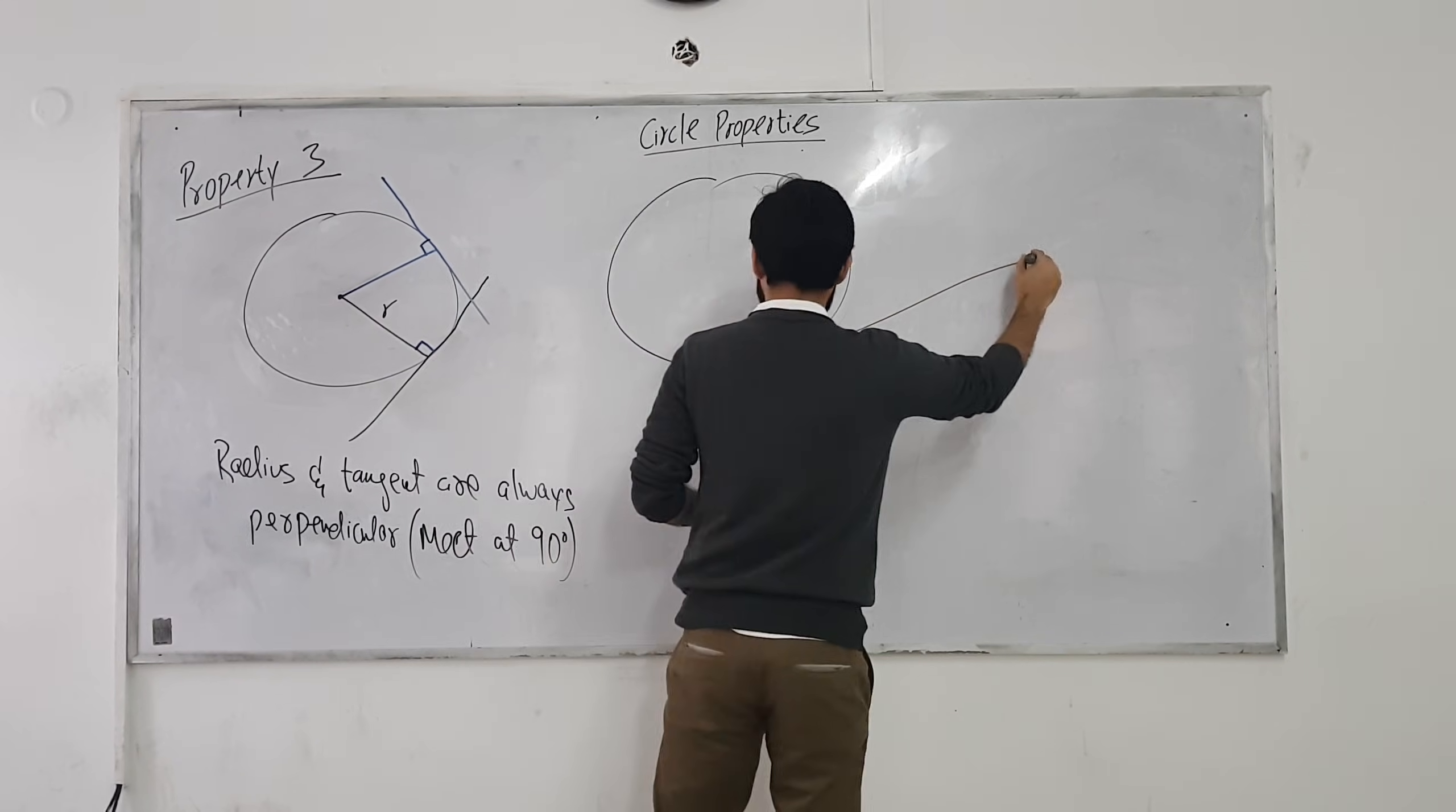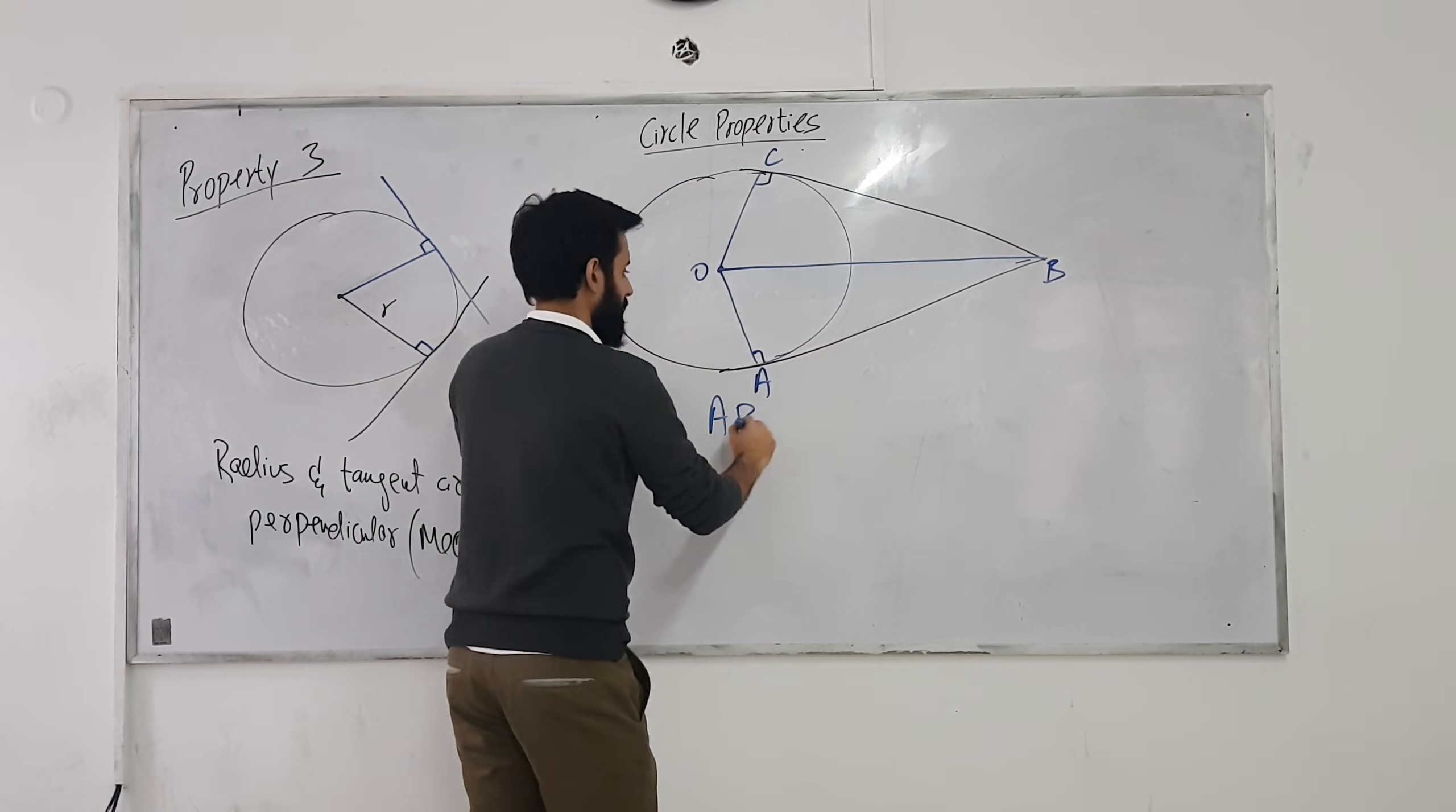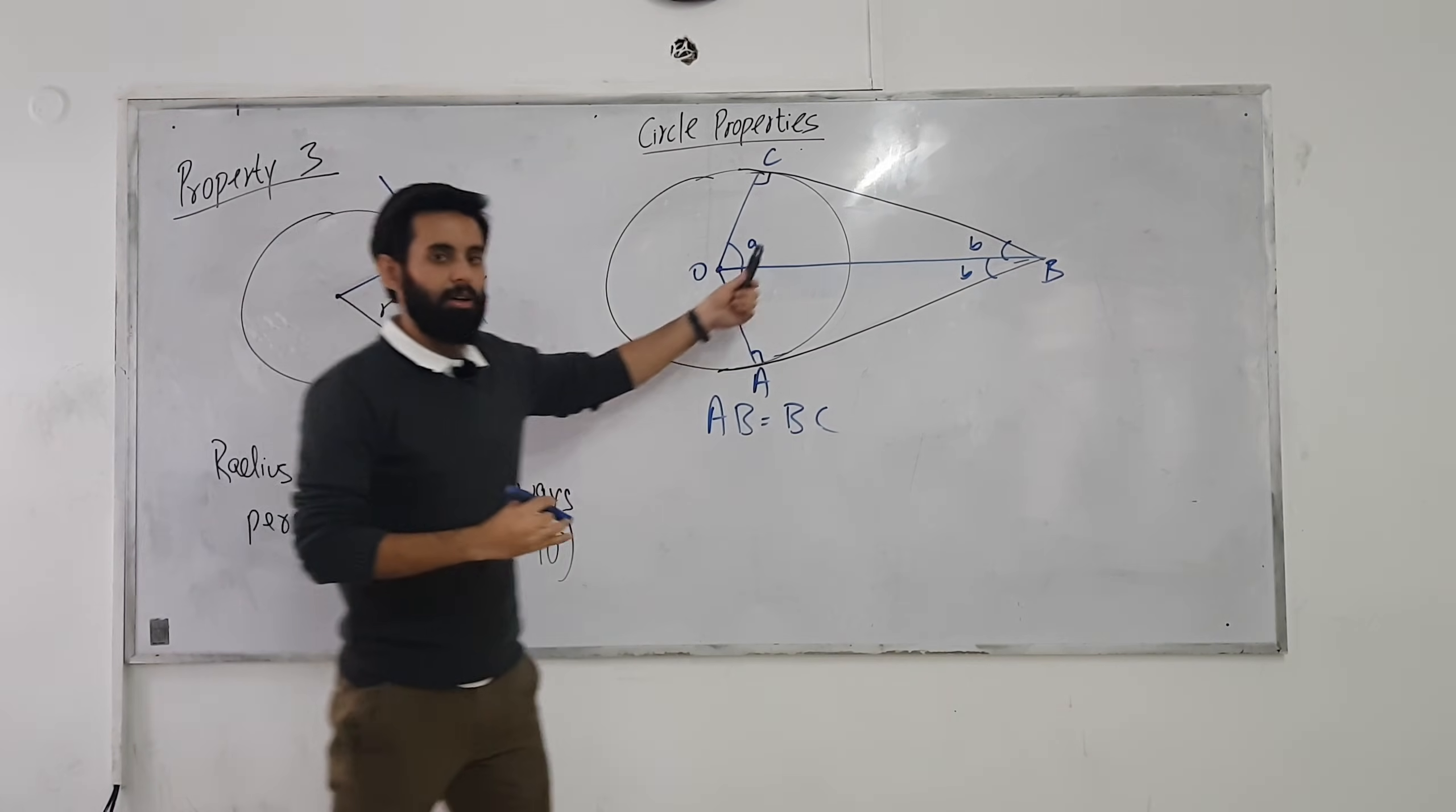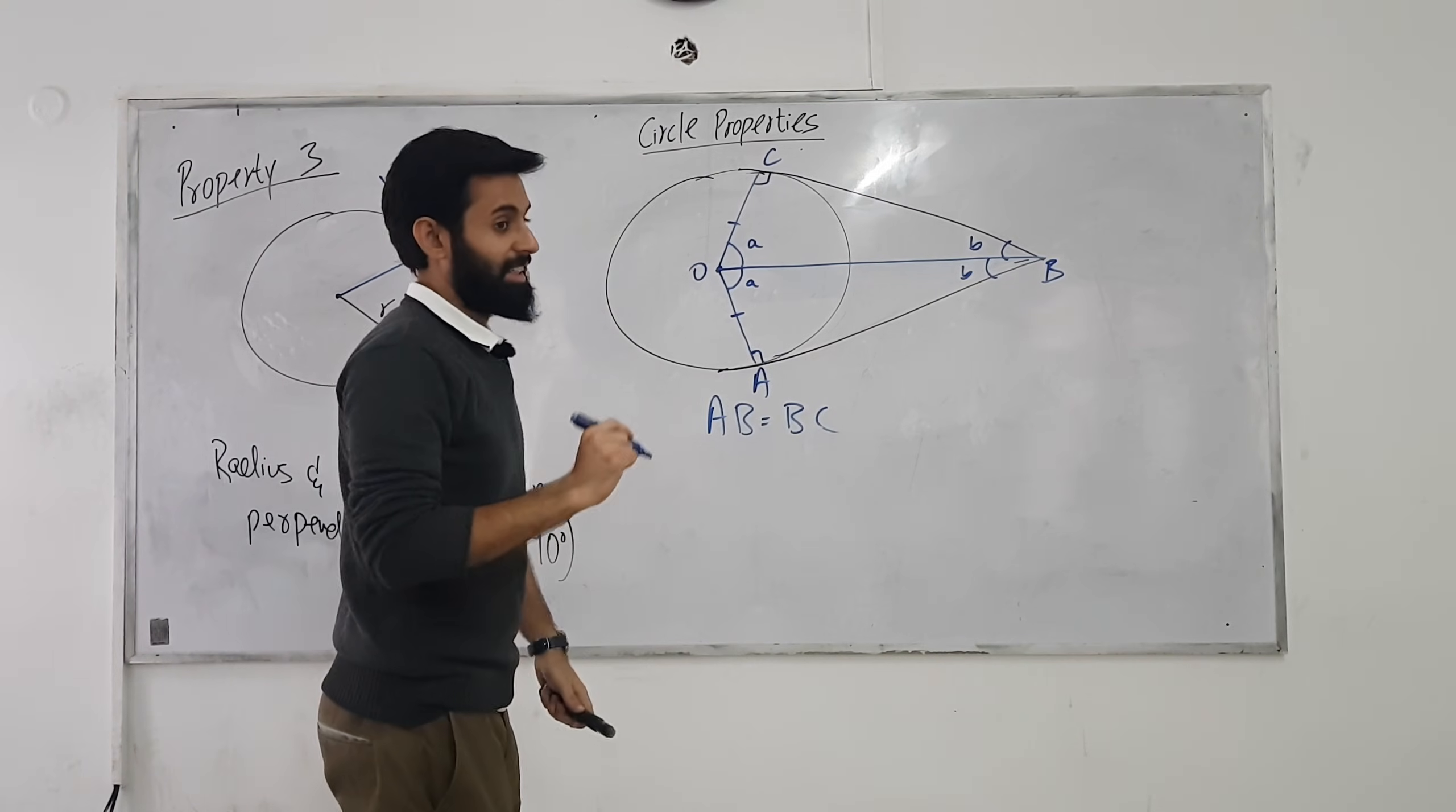It's related to the last property. If you have two tangents that meet at an external point, this property says that if you have two tangents that meet at a point, you know what they'll be in length? Equal. They'll be equal in length. So AB is equal to BC. Don't forget, if this angle is A, you know what this angle is going to be? This will also be equal to A. And if this angle is B, you know what this angle is going to be? The angle will be the same. What do you call such triangles that have equal lengths and equal angles?